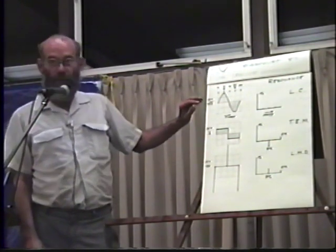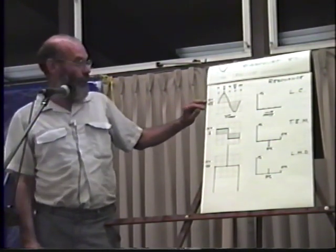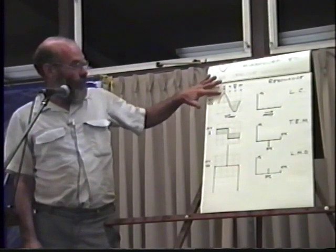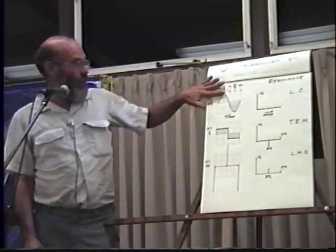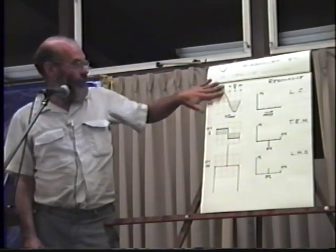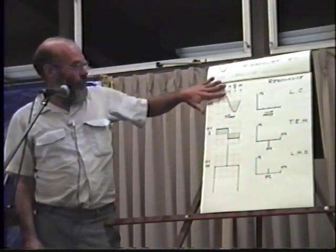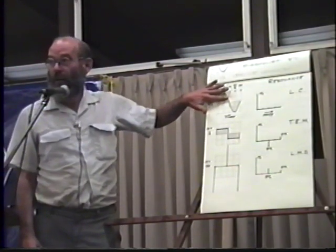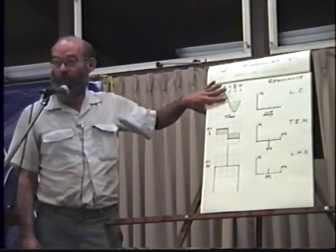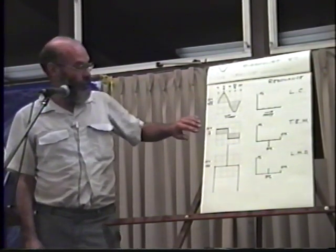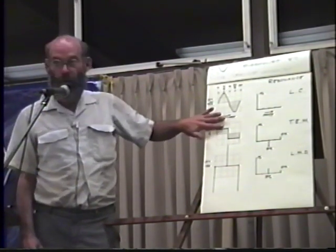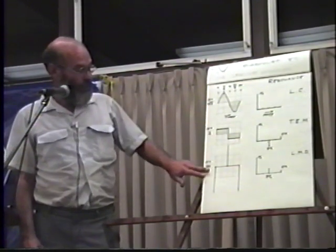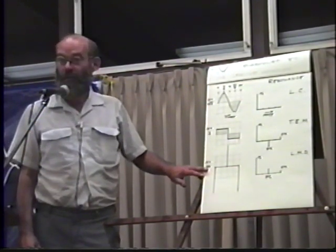Now we find with the sine wave, the amplitude is the square root of two higher — rather than one, it would be square root of two higher because of the peak-to-average ratio. With the rectangular wave, it would be one. With the impulses, it's infinity.